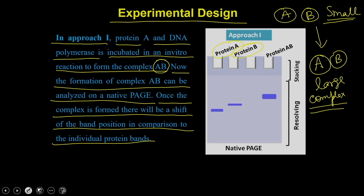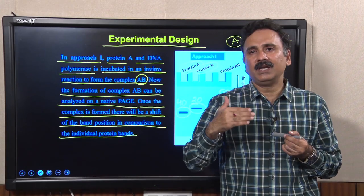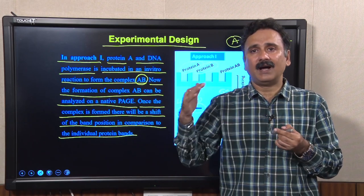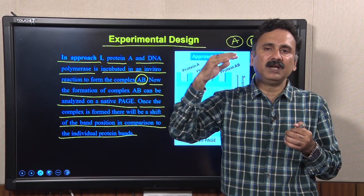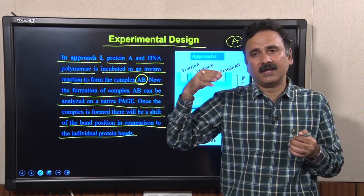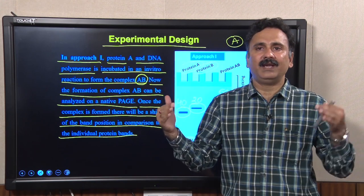If you load them into a native PAGE, protein A will run as per its own molecular weight, and protein B will run as per its own molecular weight. But the protein A-B complex, if formed, will run as per the addition of protein A and protein B. For example, if protein A is 40 kilodaltons and protein B is 20 kilodaltons, then the complex will be 60 kilodaltons, and the electrophoretic mobility of the complex is going to be on a slower side — it will run slowly and thus be away from A and B.